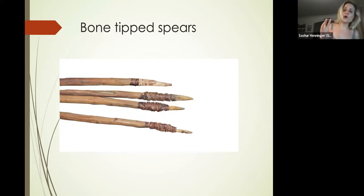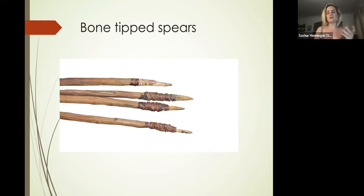Homo sapiens would use sandstone or limestone to shape bone into almost a bullet-like tip, keeping the spears very light.